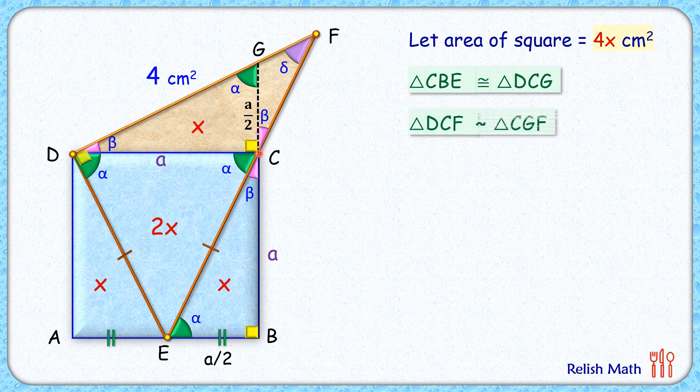And another is this small triangle, that's CGF. Both have a beta degree angle and both have one common angle delta. Thus, by angle-angle theorem, we can say that DCF and CGF are similar to each other.